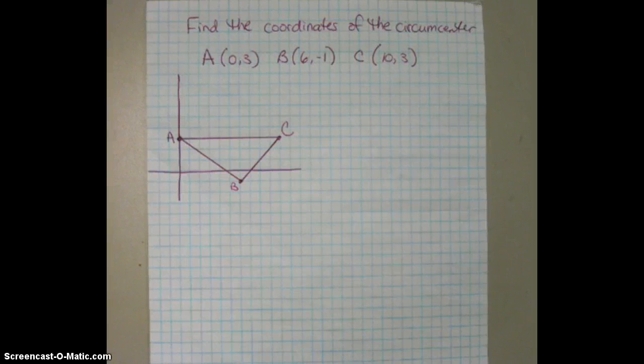We're asked to find the coordinates of the circumcenter of a triangle that has the following coordinates: A is (0,3), B is (6,-1), and C is (10,3). You can see that I actually graphed the triangle, which you don't need to do, and actually I usually don't do that, but it's good to show you as the first example.